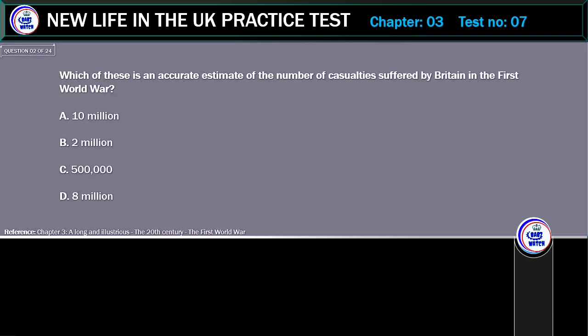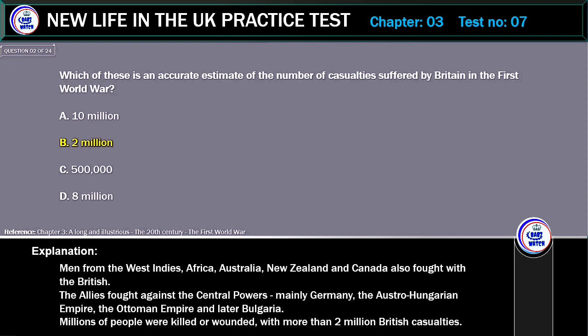Which of these is an accurate estimate of the number of casualties suffered by Britain in the First World War? A. 10 million. B. 2 million. C. 500,000. D. 8 million. Correct answer: 2 million.